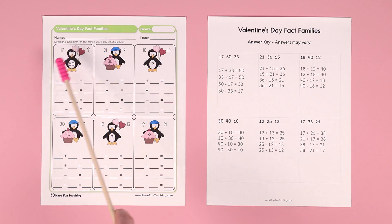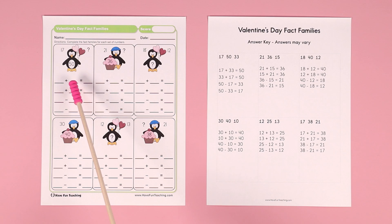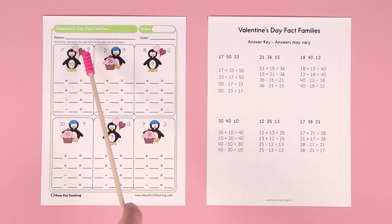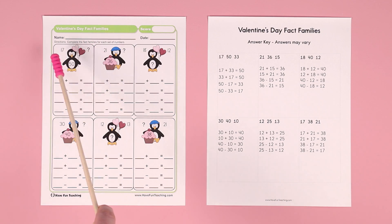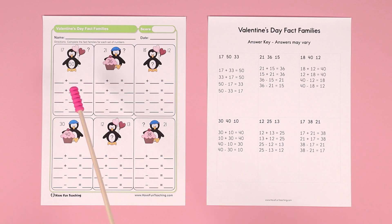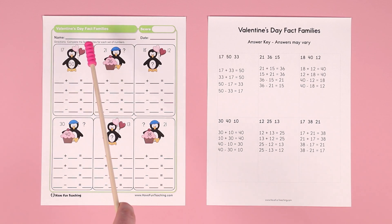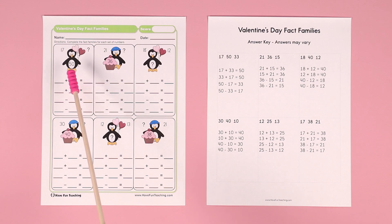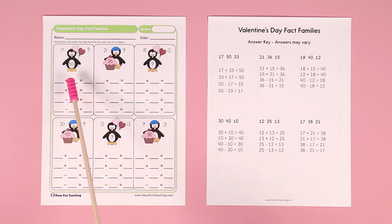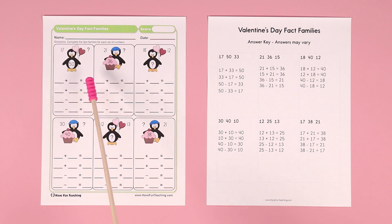So in the first example over here, we have 17, 50, and then a question mark — an unknown number. You have to find the unknown number and create the fact family. We know that 17 plus something equals 50. So the first equation is 17 plus 33 equals 50.